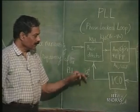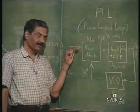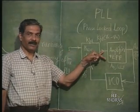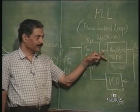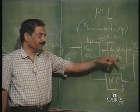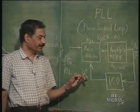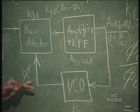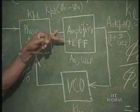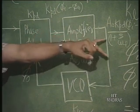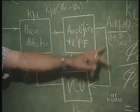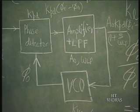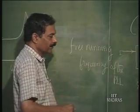The phase detector is a multiplier. If there are two frequency components omega_1 and omega_2, it produces omega_1 minus omega_2 and omega_1 plus omega_2. It is omega_1 minus omega_2 that might pass through as a low frequency component, while omega_1 plus omega_2 is rejected. When only omega_2 exists, only omega_2 appears at the output and does not pass through the low pass filter, so nothing happens to the VCO output — it continues at the free running frequency of the PLL.